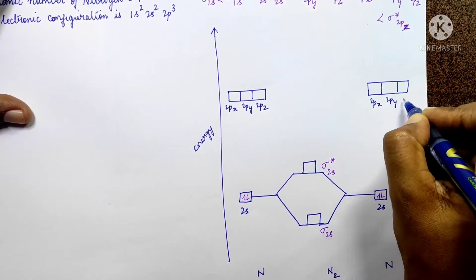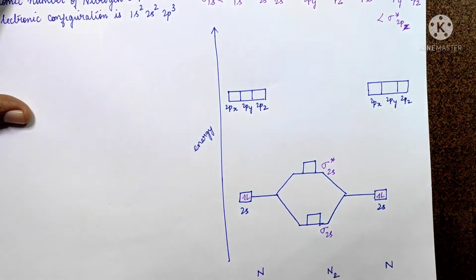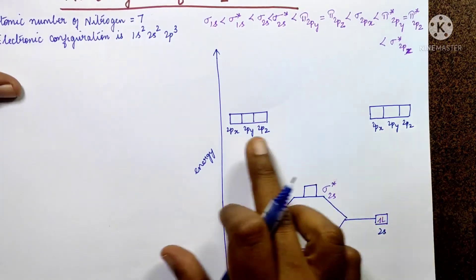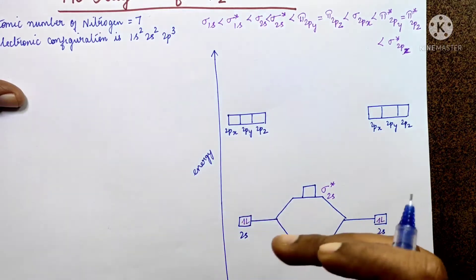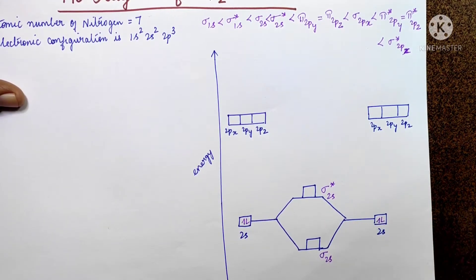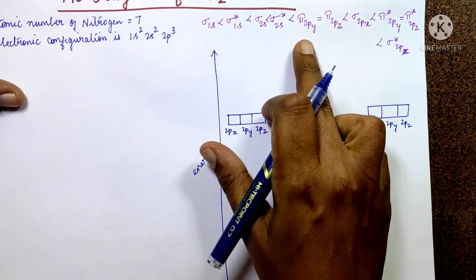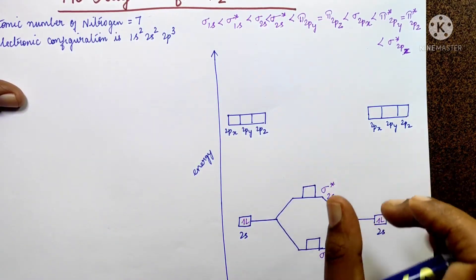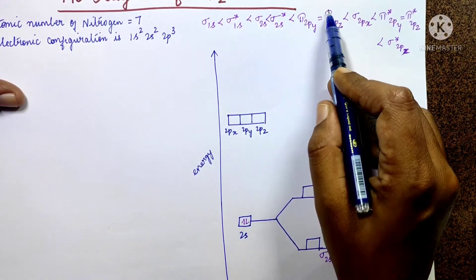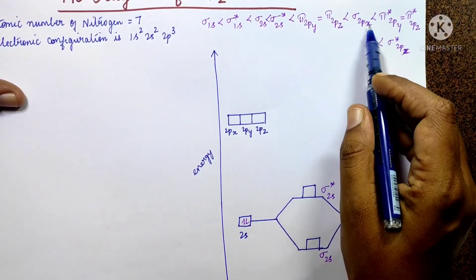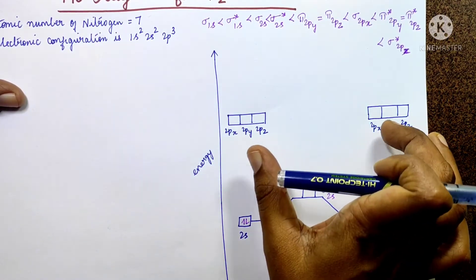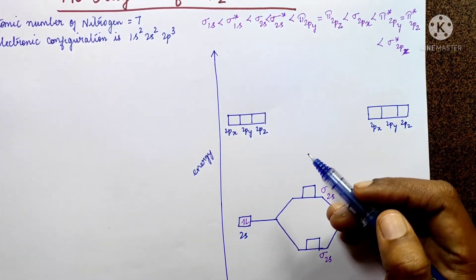Now for the 2p orbitals: we have 2px, 2py, 2pz. Three atomic orbitals form pi bonds from the p orbitals. Pi bond orbitals are formed; pi is lower energy and sigma 2px is also considered. The two pi orbitals are of higher energy than in the case of oxygen and above, so pi 2py and pi 2pz come before sigma 2px.